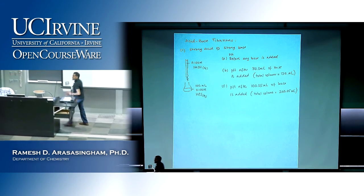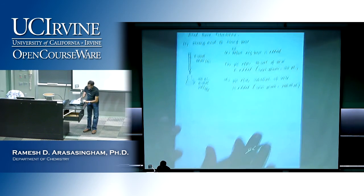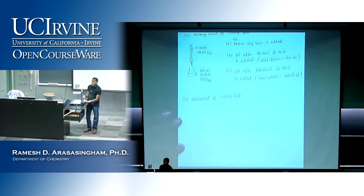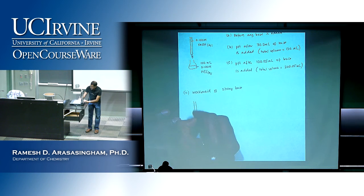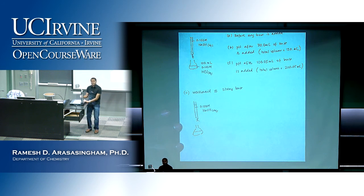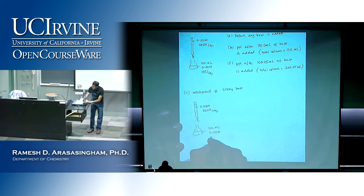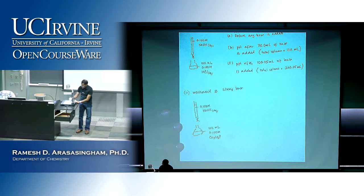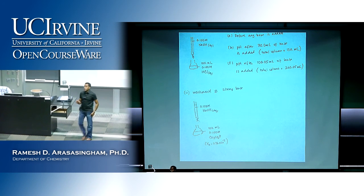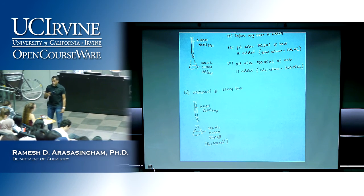Today we're going to move on to looking at the second class of titrations — where we have a weak acid with a strong base. We're going to look at a titration where you have 0.1 molar sodium hydroxide in the burette, but now in the flask, instead of having HCl, we're going to have a weak acid: 100 mL of 0.1 molar acetic acid. This is a weak acid because Ka equals 1.76 × 10⁻⁵. Now we're going to do the same calculations, but for a weak acid.